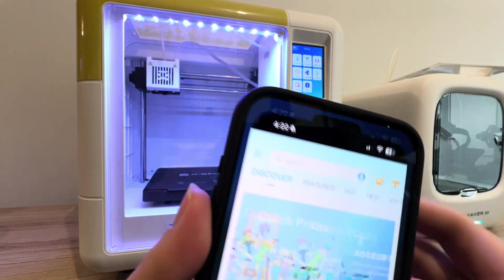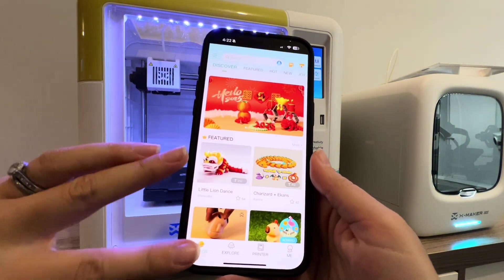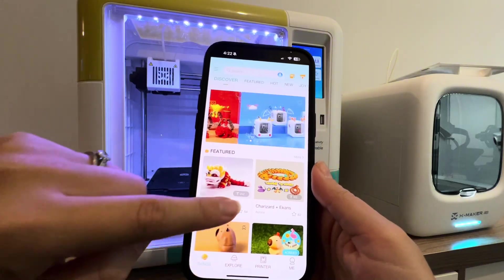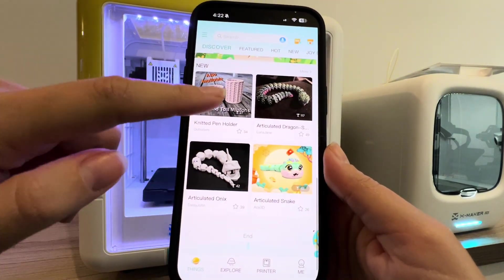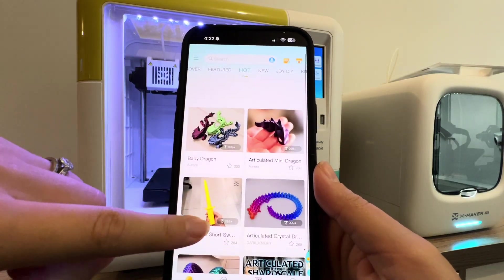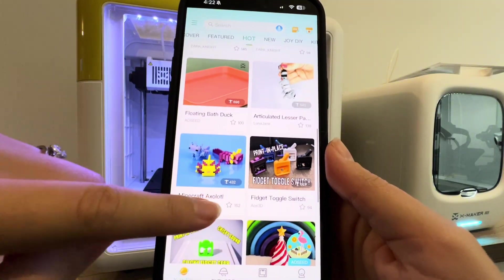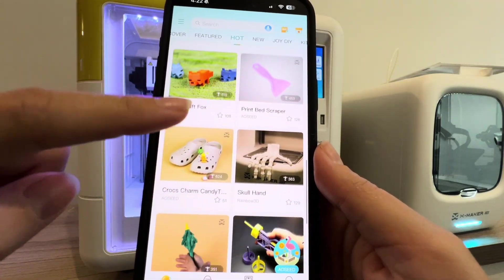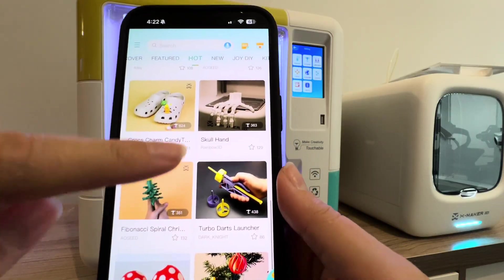Now I'm going to go into the Xmaker app and look for a print. You can see on the home screen here that there's so many prints to choose from. This is the discover section. You can click on all the different sections to see what's available. You can also use the search bar to look for something specific. There's a lot of really cool prints and kids can just go through on the app and choose what they're interested in.